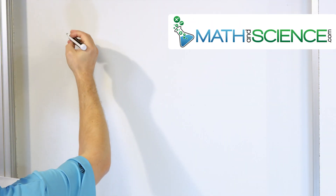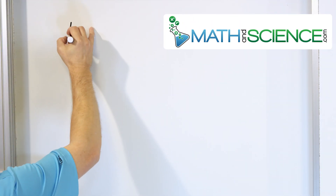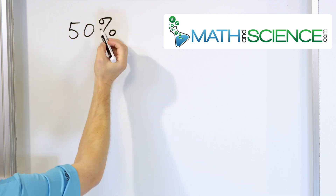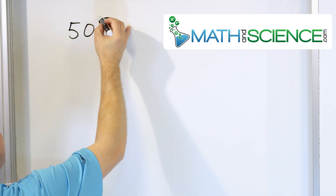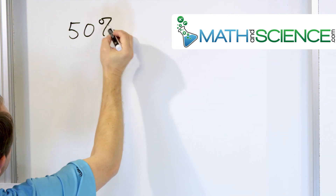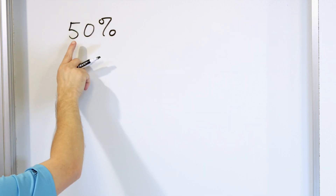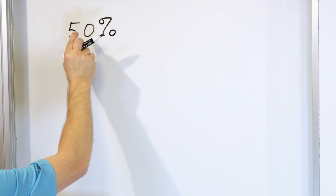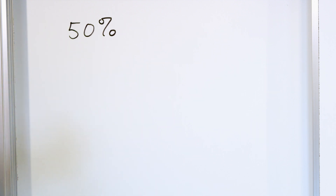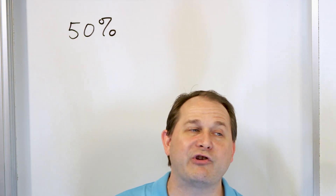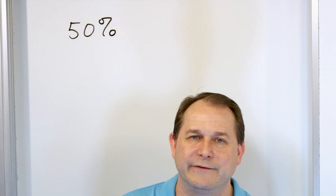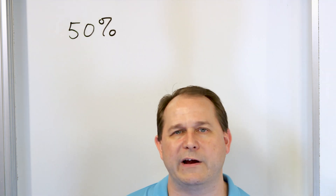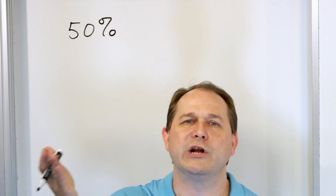Let's talk about this idea of 50 percent. This symbol — you might have to practice writing it a few times. You make a little circle, come down, and draw another circle. This means 50 percent. What it literally means is 50 as compared to 100. We've been talking about ratios, and now we learn percentages because they're just a type of ratio. Percent means per 100.